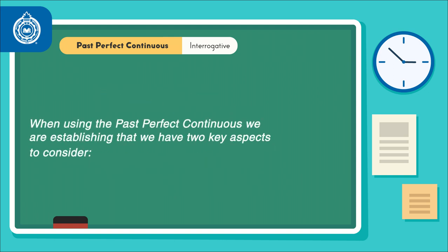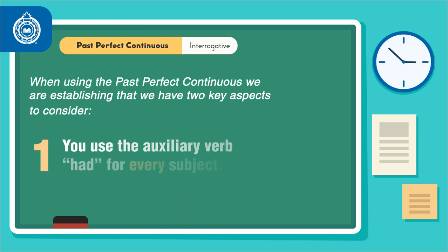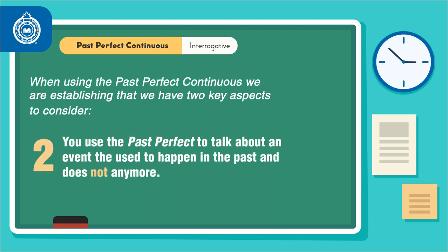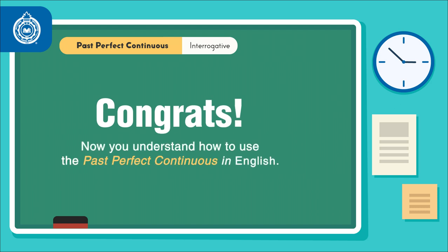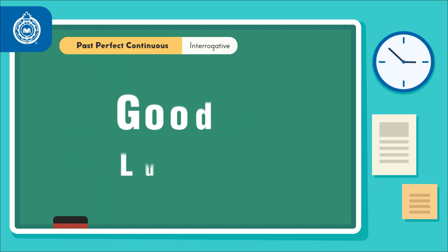Please remember: when using the past perfect continuous, we are establishing two key aspects to consider. First, the use of the auxiliary verb 'had' for every subject. And second, the use of the past perfect to talk about an event that used to happen in the past and does not anymore. Congrats! Now you understand how to use the past perfect continuous in English. Good luck!